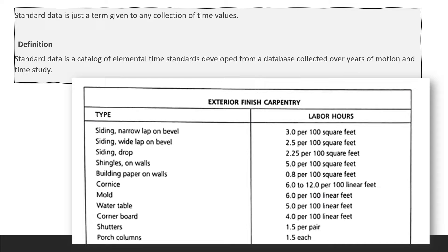I'll give you the top part of this table, the entire table is in your handout. Here you can see the exterior finished carpentry standard data telling you everything about labor hours. For siding narrow lap on bevel, you're going to spend 3.0 hours per 100 square feet. That's your standard data.